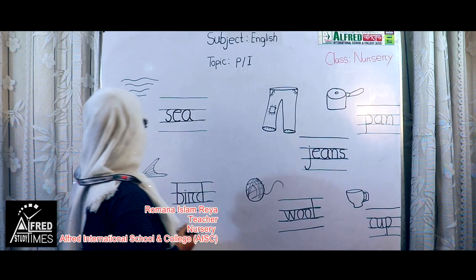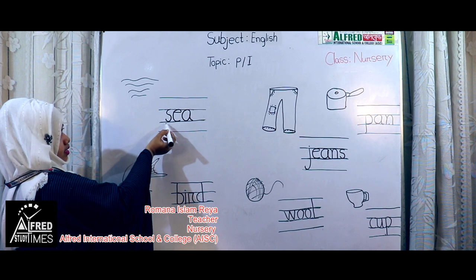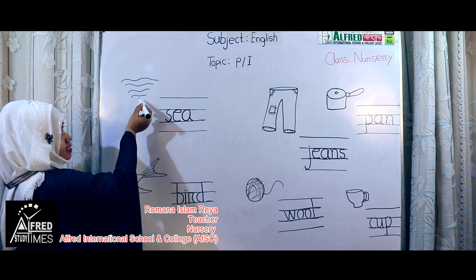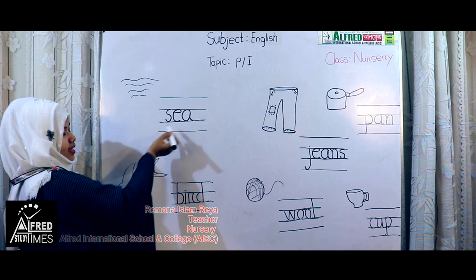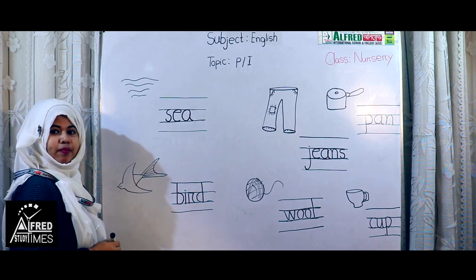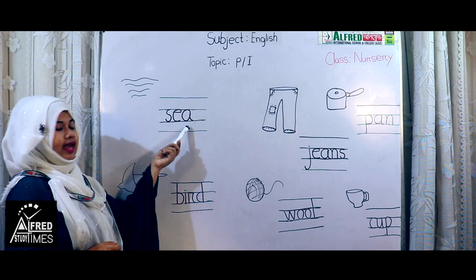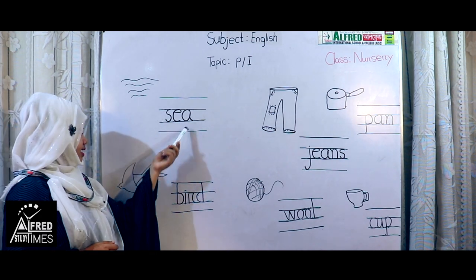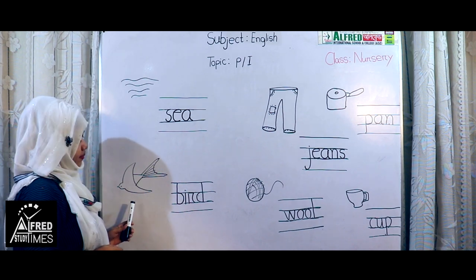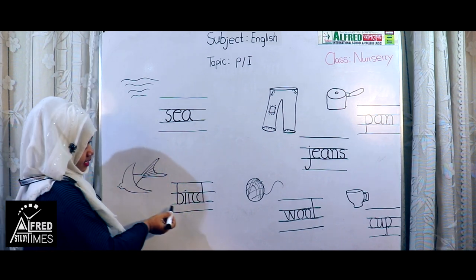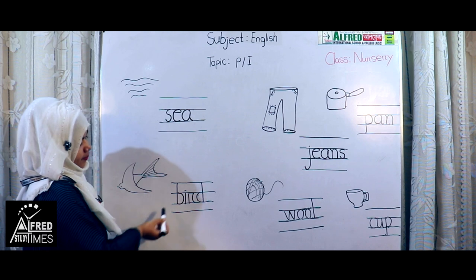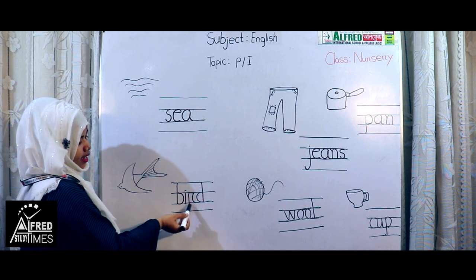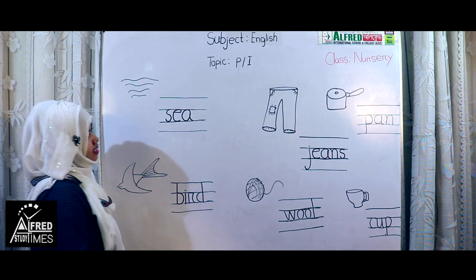Everyone, again start. What is this? C. S-E-A-C. Everyone say with me: S-E-A-C. Next, bird. Bird is spelling B-I-R-D. Bird. B-I-R-D. Bird.